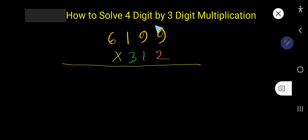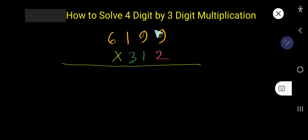How to solve 4-digit by 3-digit multiplication. This is a 4-digit number and this is a 3-digit number, so we need to multiply this 4-digit number by this 3-digit number. Let us start.